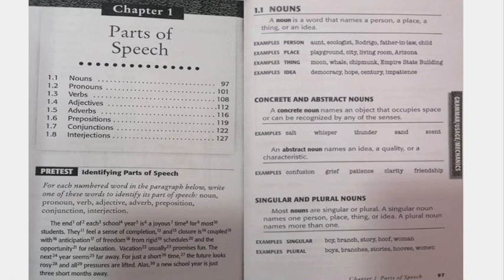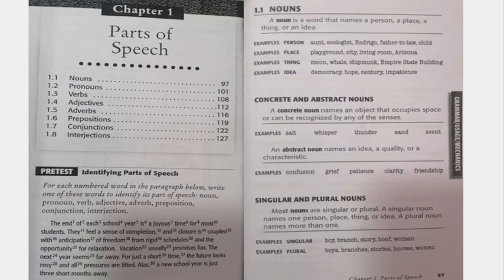Abstract nouns are names or nouns referring to an idea, quality, or characteristic. Examples would be confusion, grief, patience, clarity, or friendship. Can you sense confusion with any of your physical senses? You may have heard expressions like 'I smell fear in these halls,' but that is not a literal meaning — that is creative, idiomatic language. When we discuss parts of speech, we describe nouns in a more literal sense.